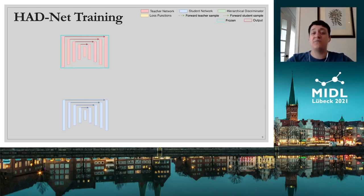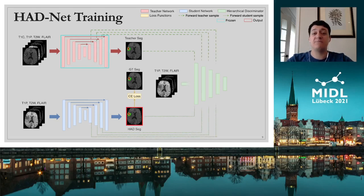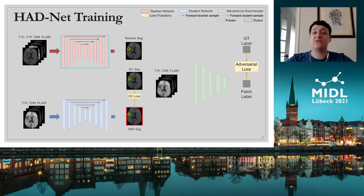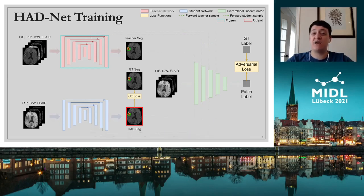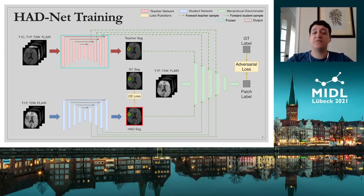Therefore, in order to bridge this gap, we introduce the HD, which attempts to map their segmentation maps and multi-scale feature maps to a common space. More concretely, this is done via an adversarial game played between the student and the HD, in which the discriminator tries to distinguish between the segmentation map and multi-scale features of the teacher from those of the student, while the student tries to fool it into misclassifying its segmentation map and features. Ultimately, the gradient signal resulting from this adversarial game teaches the student network to more reliably segment enhancing structures without post-contrast images.